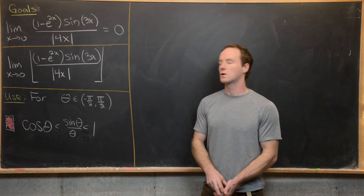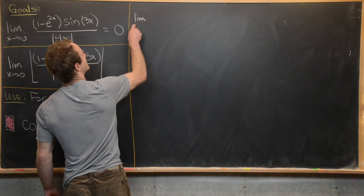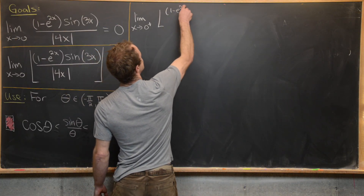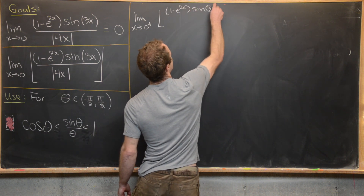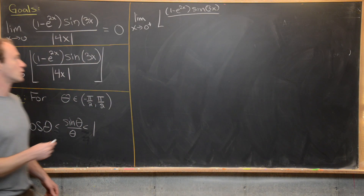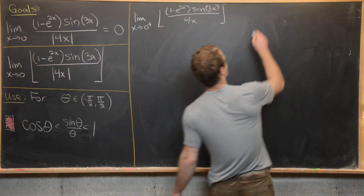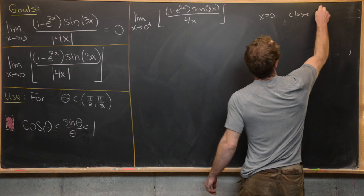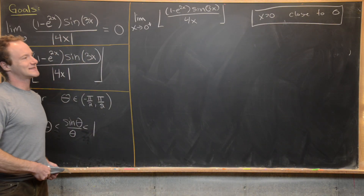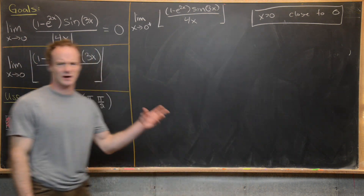For the right-handed limit, since x is positive, the absolute value of 4x is just 4x, so we remove it. We want to understand the behavior when x is close to zero from above. It's likely the floor will take us down to some constant value. After a bit of calculation, we take x in the intersection of (0, π/6) and (0, ½·ln2).